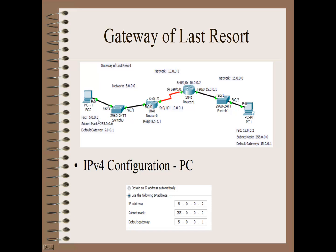We've configured the first PC with IP address 5.0.0.2, subnet mask 255.0.0.0, and its default gateway is 5.0.0.1. That default gateway is the first router the PC is connected to - all IP traffic packets are going to be sent to that first router. Looking at the router, the ethernet connection FA0/0 has IP address 5.0.0.1. Traffic moving out of this router goes onto a serial line on serial port SE0/1/0, configured with IP address 10.0.0.1. On the other side of this serial line we're connected to a second router.